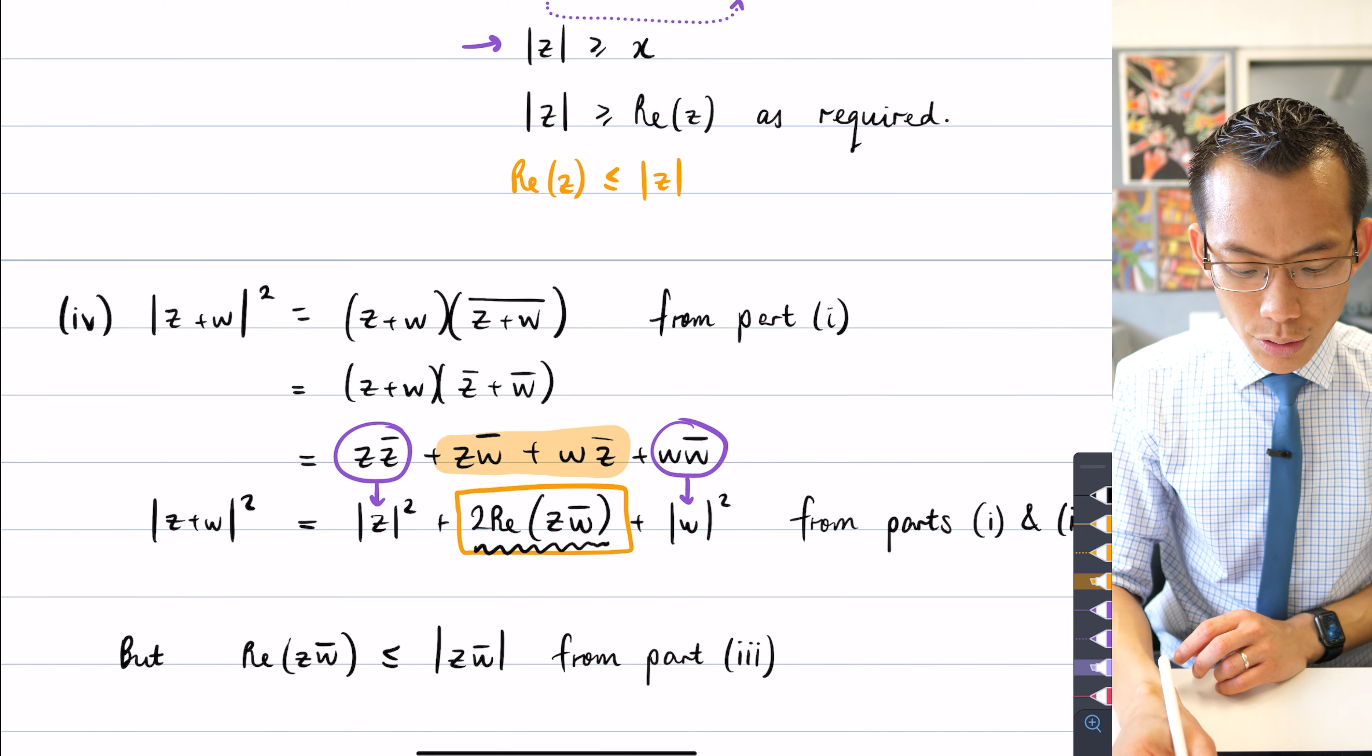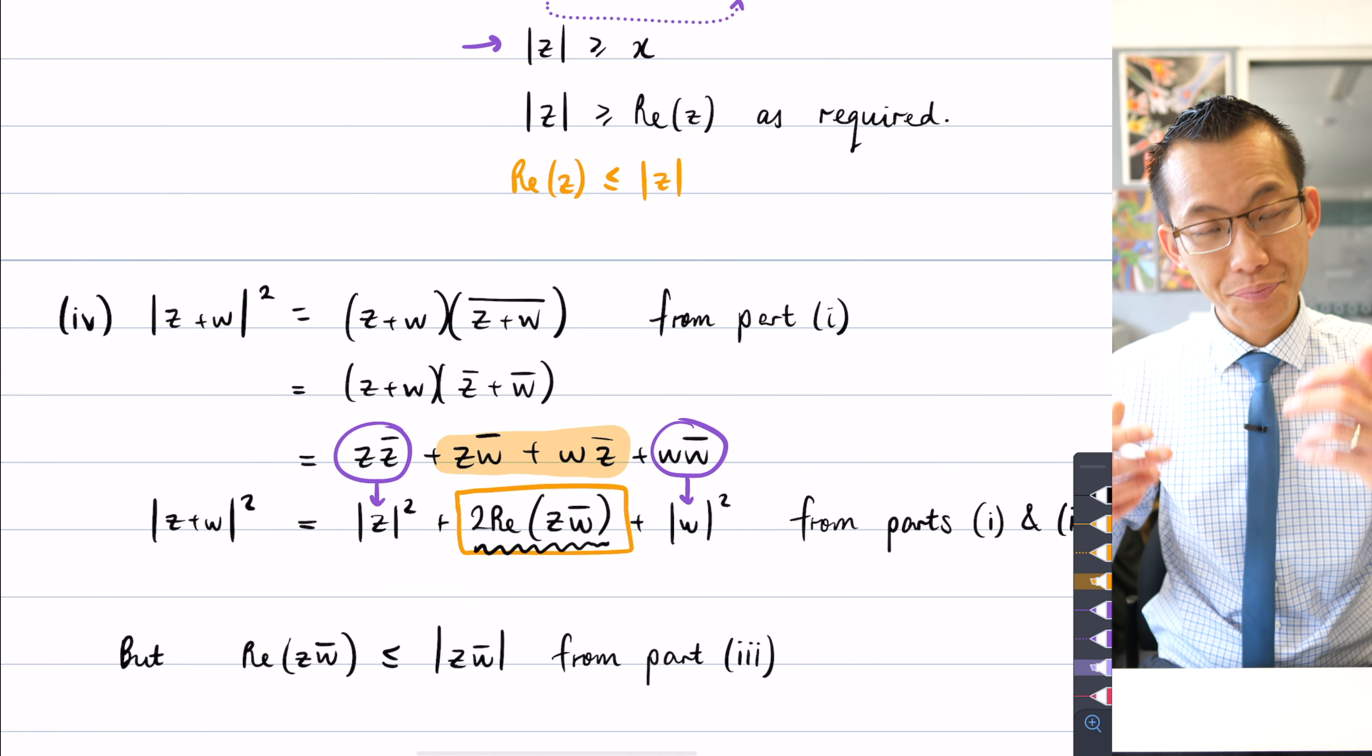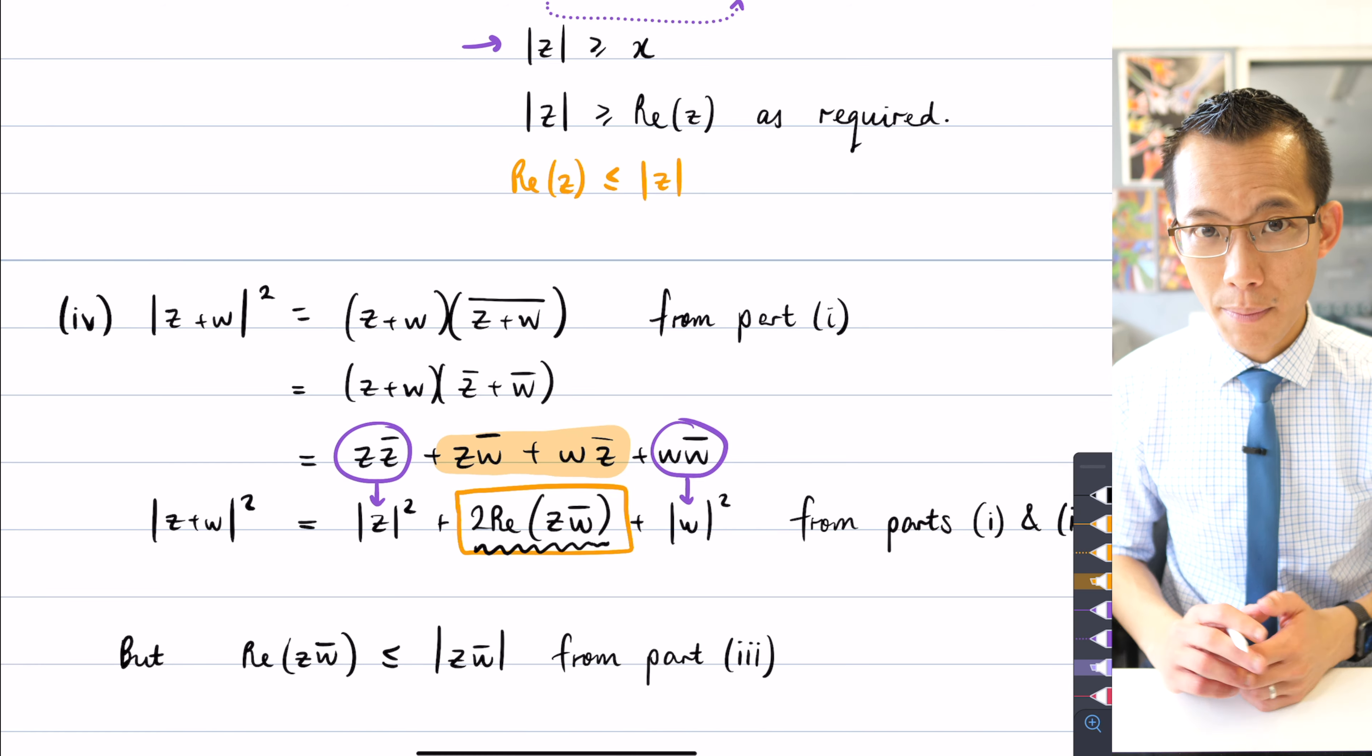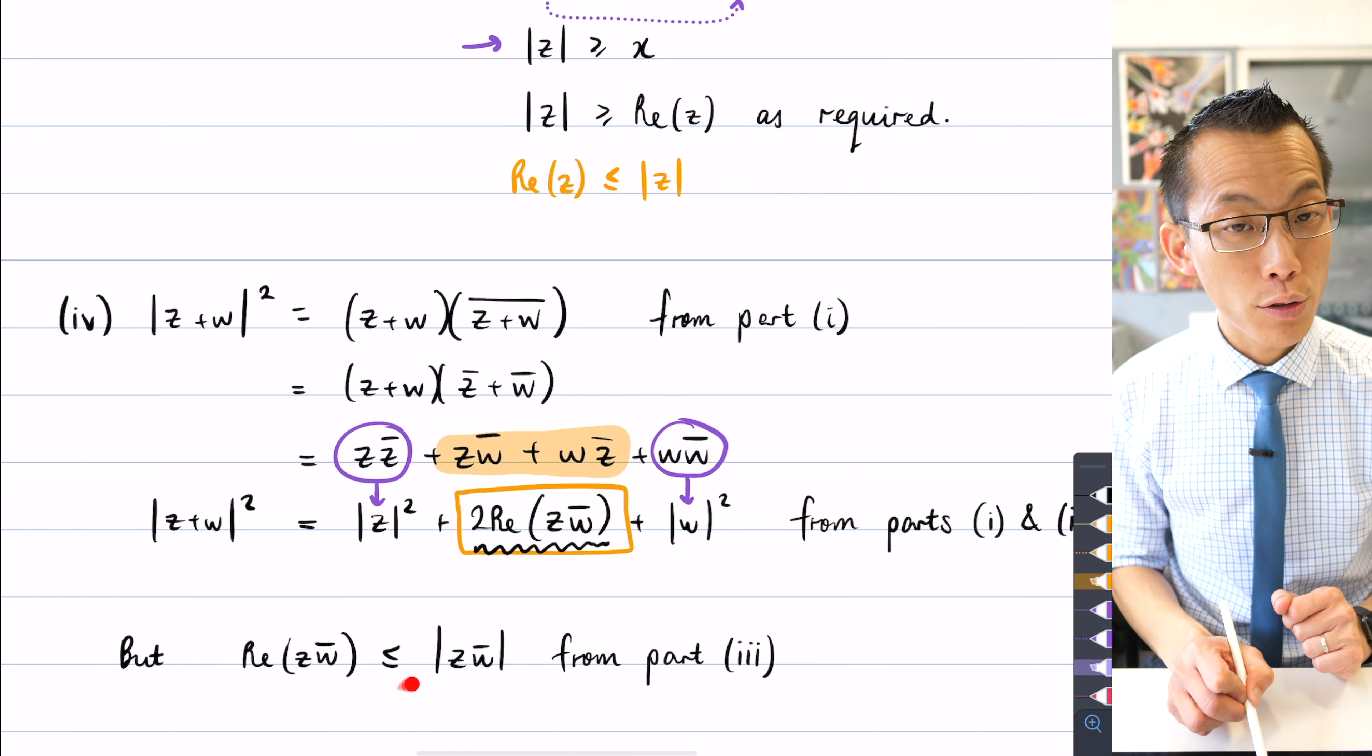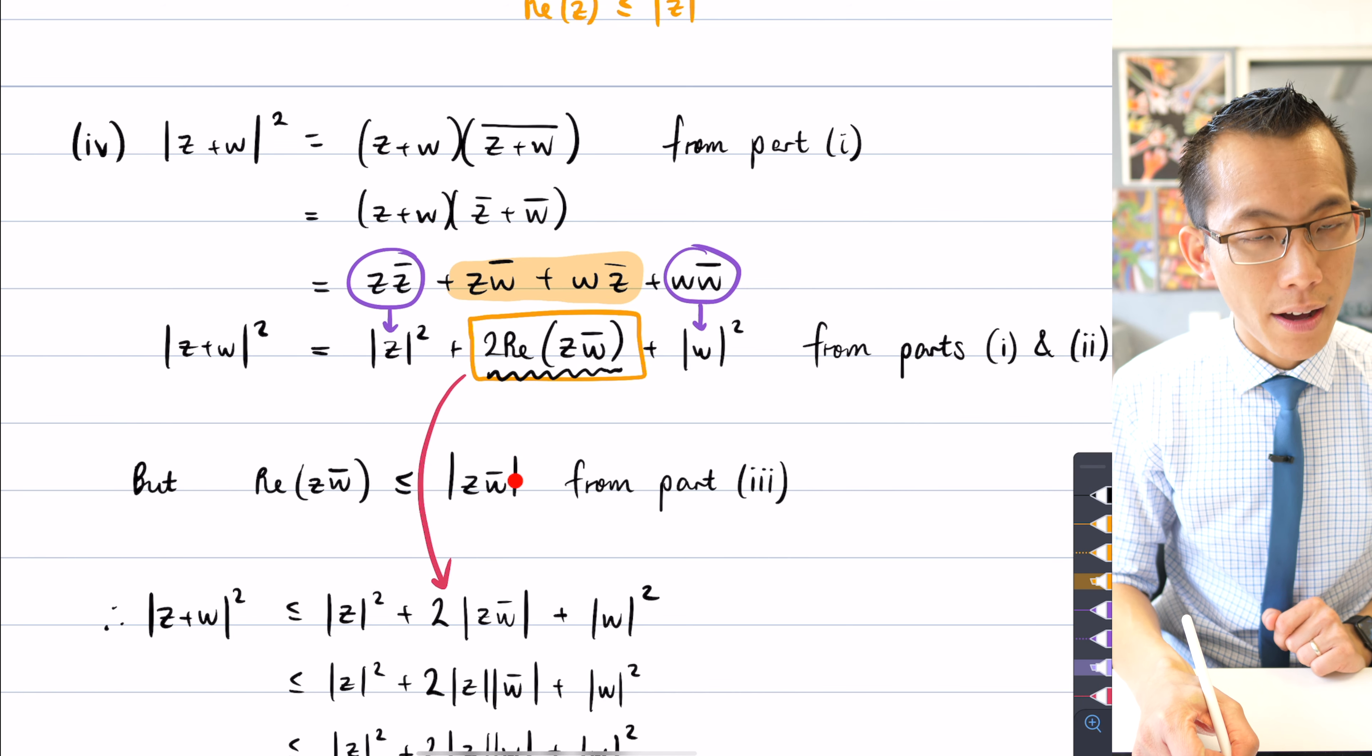And you can see, if I were to substitute, instead of writing Z, if I were to write ZW bar, then I could put the real part of ZW bar is less than or equal to the modulus of ZW bar. And that is indeed exactly what I've written here. That was what I had from part three. And the reason why this is so powerful is because then I can turn this equation into an inequality by substituting something smaller for something bigger. So you can see here, I've substituted this for something bigger than itself.